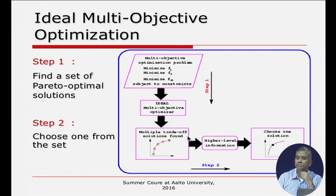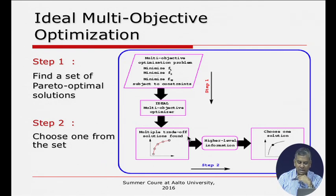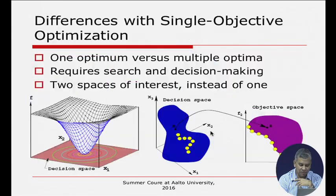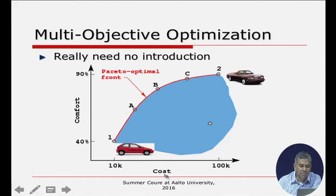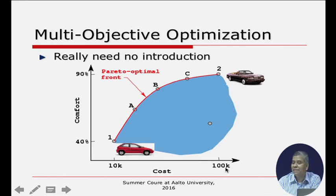For example, in a car-choice problem with cost to minimize and comfort to maximize, automakers present multiple Pareto optimal solutions — cars at different price points with different comfort levels — and the customer acts as the decision maker, choosing which product suits them. Similarly in a departmental store, kitchen mixers at different price-quality trade-offs are all Pareto optimal solutions. The user selects based on their needs and budget. This two-phase approach — optimization first, decision making second — is the EMO philosophy.